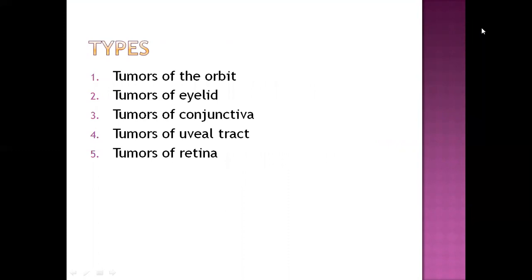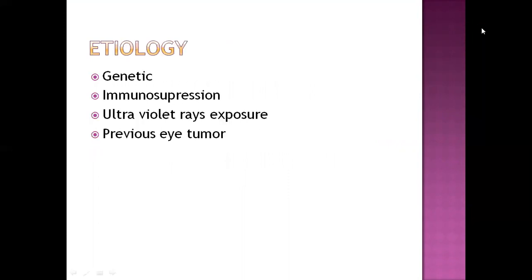Types of eye tumors are: tumors of the orbit, tumors of eyelid, tumors of conjunctiva, tumors of uveal tract, and tumors of retina. Causes include genetic reasons, immunosuppression, ultraviolet ray exposure, and previous eye tumor history.